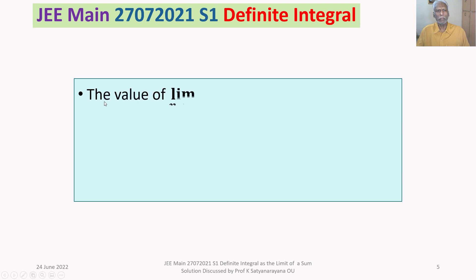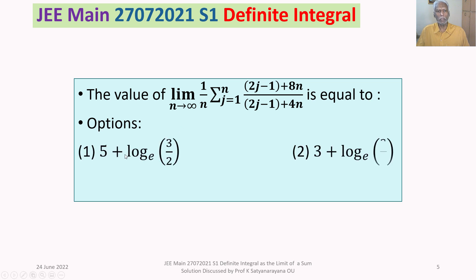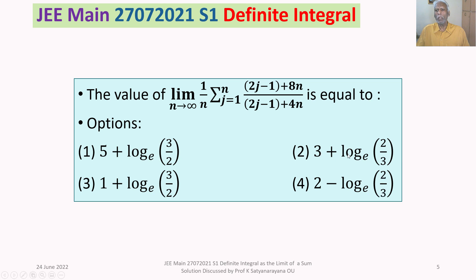The problem is: find the value of limit n tends to infinity of (1/n) times sigma from j=1 to n of (2j − 1 + 8n) / (2j − 1 + 4n). The four options are: Option 1: 5 + ln(3/2); Option 2: 3 + ln(2/3); Option 3: 1 + ln(3/2); Option 4: 2 − ln(2/3). All logarithms are to base e.